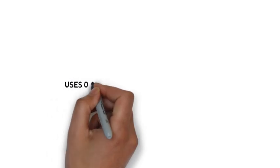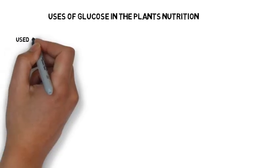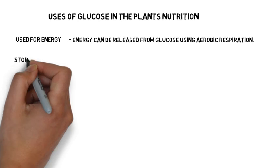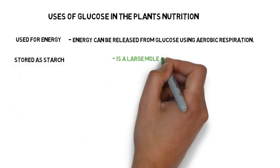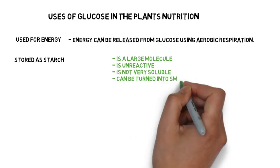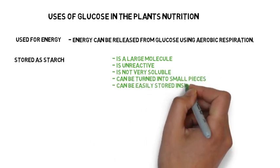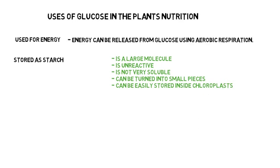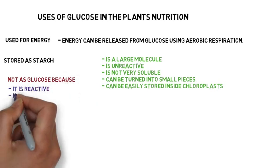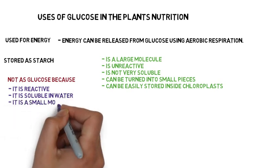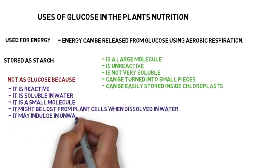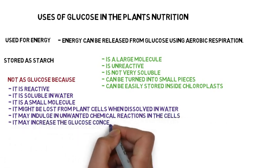Uses of glucose in the plant's nutrition. Glucose is used for energy, which can be released using aerobic respiration. It is also stored as starch because starch is a large molecule, it is unreactive, it is not very soluble, and it can be turned into small pieces and easily stored inside chloroplasts. Glucose is not stored in its original form because it is reactive, soluble in water, and is a small molecule that may be lost from plant cells when dissolved in water, may indulge in unwanted chemical reactions, and may increase glucose concentration in the cell and cause damage.